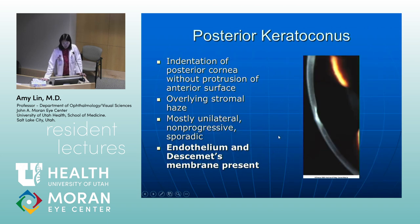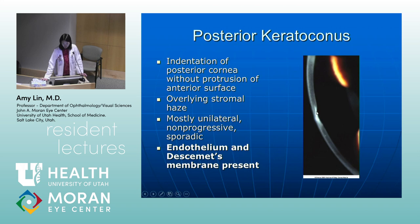Posterior keratoconus is an indentation of the posterior cornea without protrusion of the anterior surface. There can be some overlying stromal haze. It's usually unilateral, non-progressive, and sporadic. In this case, endothelium and Descemet's membrane are present underneath the stromal opacity — distinguishing it from Peter's anomaly.